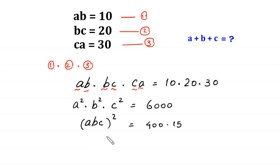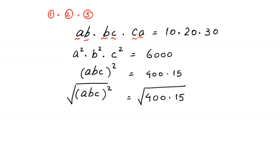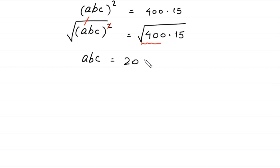Now we take the square root of both sides. (a·b·c)² at the left side, and 400 times 15 at the right side. The square cancels with the square root on the left, leaving a·b·c equal to the square root of 400, which is 20, times the square root of 15. So a·b·c equals 20√15. We name this equation 4.